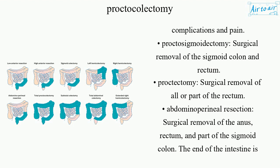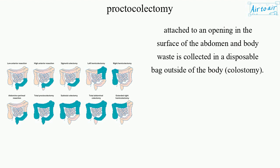Proctosigmoidectomy: surgical removal of the sigmoid colon and rectum. Proctectomy: surgical removal of all or part of the rectum. Abdominoperineal resection: surgical removal of the anus, rectum, and part of the sigmoid colon. The end of the intestine is attached to an opening in the surface of the abdomen, and body waste is collected in a disposable bag outside of the body.